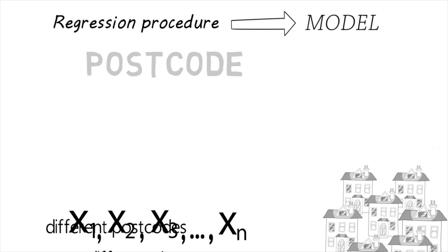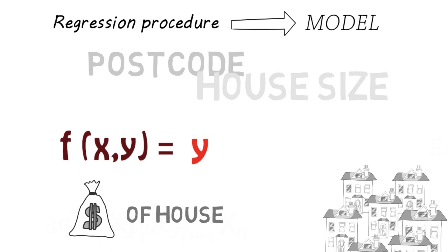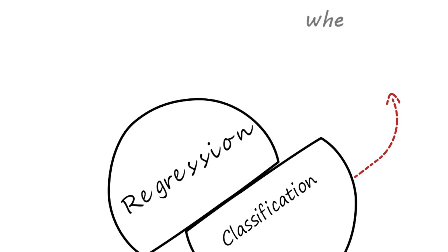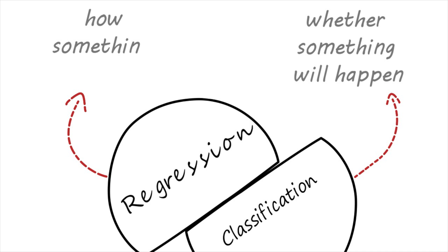A regression procedure produces a model that, given a certain postcode and house size, estimates the price of the house. Regression is related to classification, but the two are different. In simple terms, classification forecasts whether something will happen, while regression forecasts how something will happen.